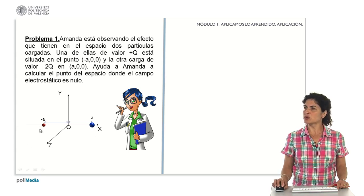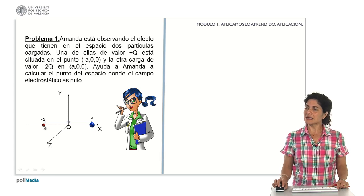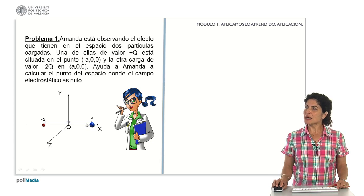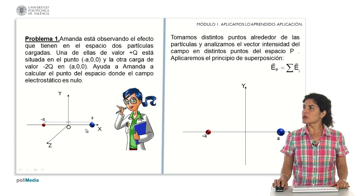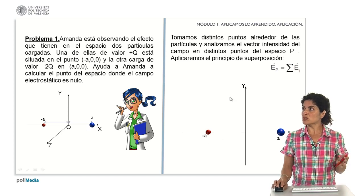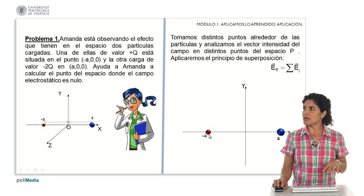We have it very well characterized in our system, in this reference frame: my positive particle on the negative part of the OX axis, and my negative charge on the positive part of the OX axis. What we have to keep in mind is that I am going to analyze at the point of study the effect of the positive charge and the negative charge.